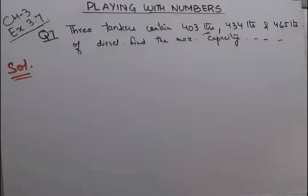Starting with question number 7 from exercise 3.7, playing with numbers. Question is: three tankers contain 403 litres, 434 litres and 465 litres of diesel respectively. Find the maximum capacity of a container that can measure the diesel of 3 containers exact number of times.